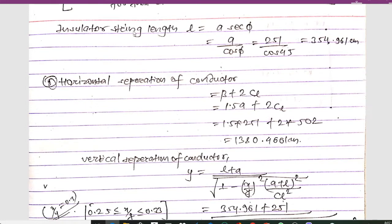The insulator string length L is calculated using the formula L = A / cos φ. With A = 251 centimeters and φ = 45 degrees, we get: L = 251 / cos 45° = 354.96 centimeters.